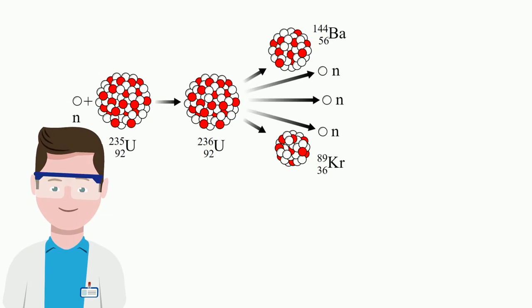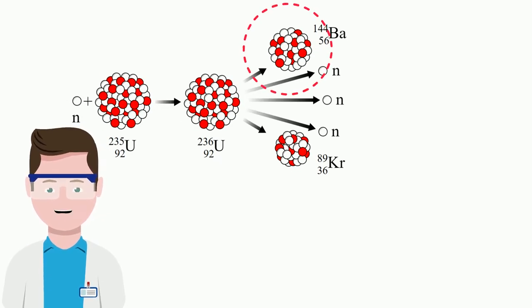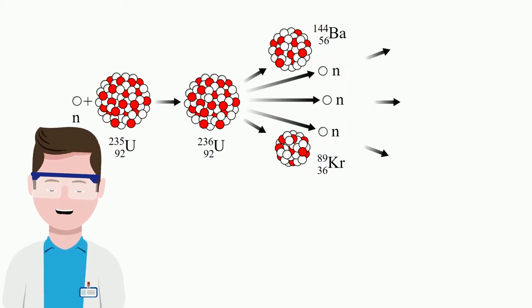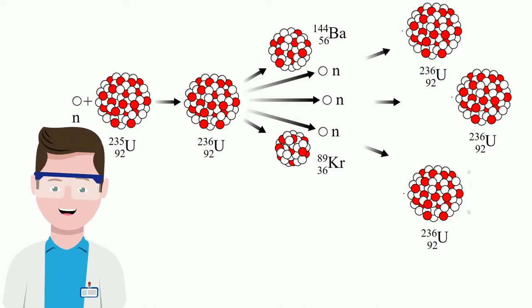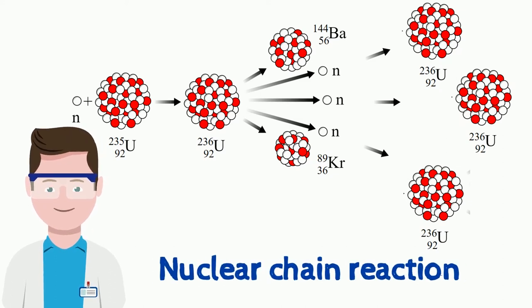Looking at the uranium reaction again. The smaller nuclei are generated, three other neutrons are released, and they will bombard other uranium atoms, and more energy is released. We call this process a chain reaction.